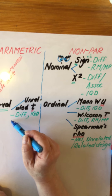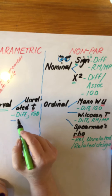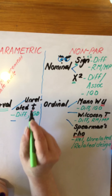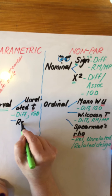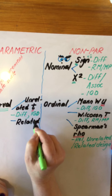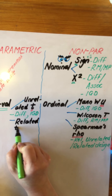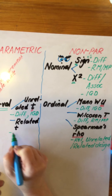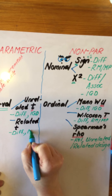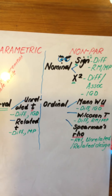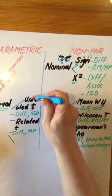If on the other hand we have repeated measures or matched pairs, then we know we can't use Mann-Whitney U or unrelated t. What we need now is related t — and obviously that's because repeated measures or matched pairs is a related design. Related t is exactly the same as unrelated t: it's a test of difference, matched pairs or repeated measures.